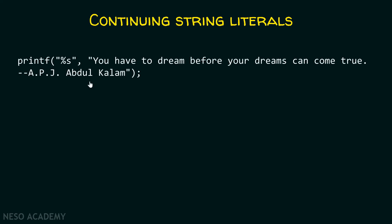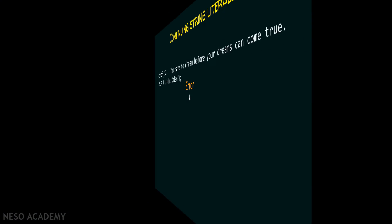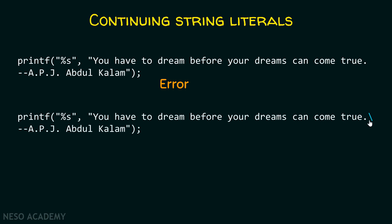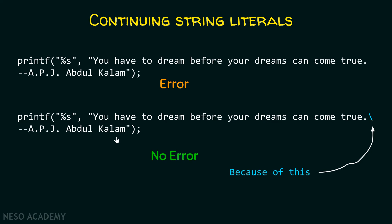Also, I cannot write something like this in a C program. Suppose I have a string literal which is a big sentence — for example, 'you have to dream before your dreams can come true' — and I want to mention this sentence on the next line instead of in the same line. But this is not allowed in C programming; this particular printf function will produce an error message. However, you can add a backslash at the end of the sentence, which will allow you to continue to the next line with no error. This method is called splicing in C language.